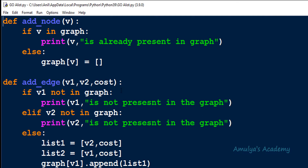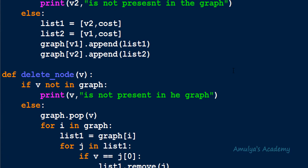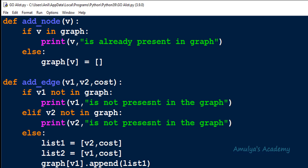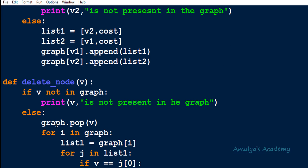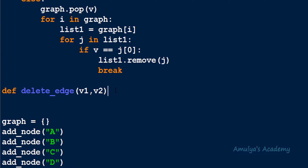Let's write the function. Here we have our program implementing graph using adjacency list representation with a dictionary called graph, starting as an empty dictionary. We add nodes and edges using add_node and add_edge functions. In the previous tutorial we wrote delete_node; today let's write delete_edge. So: def delete_edge — the function takes V1 and V2 as parameters, since we need to mention two vertices when deleting an edge.